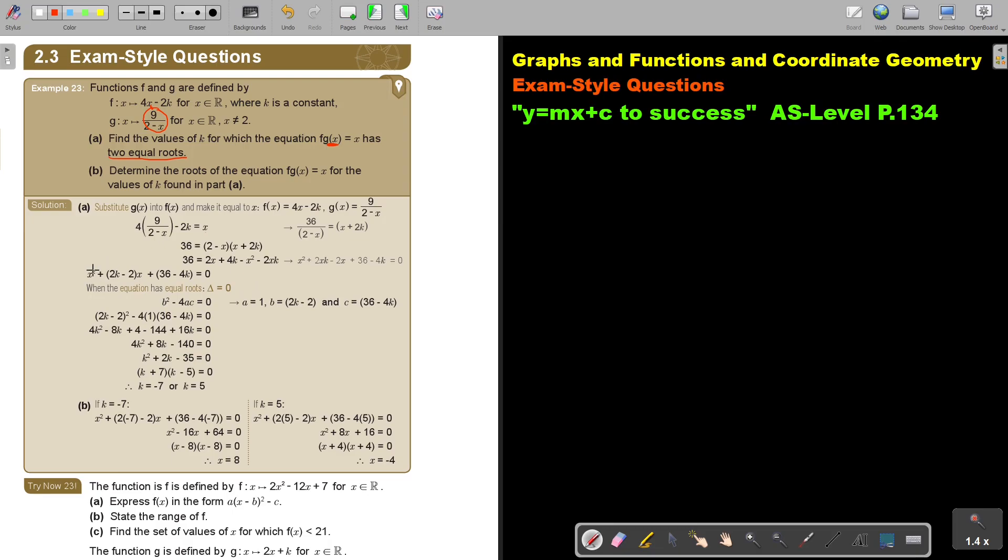Substitute - this is a, this is b, and this is c. I substitute it in, get my quadratic equation, factorize, and get my value of k is negative 7, and k is 5.